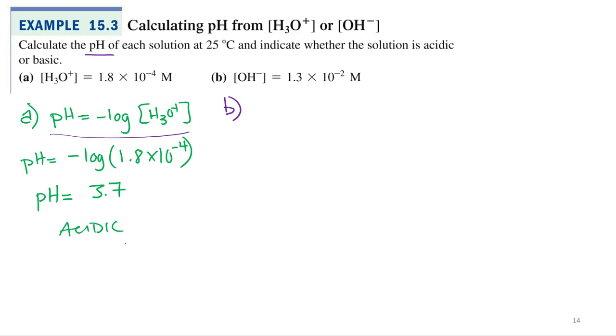So here's how I solve this problem. I've got hydroxide. First, I calculate pOH. pOH equals negative log of the hydroxide. That equals negative log of 1.3 times 10 to the negative 2. And so what do I get for my pOH?